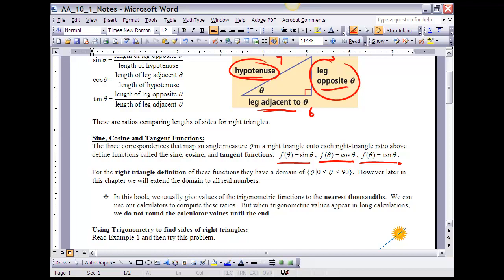For the right triangle definition of these functions, they have a domain of 0 to 90 degrees. Because we're talking about a right triangle, there's no way that that angle can be any greater than an acute angle. However, later in this course, as we explore a little bit more with sine, cosine, and tangent, we're going to find that we're going to extend that domain beyond just 0 to 90, and in fact to all real numbers.